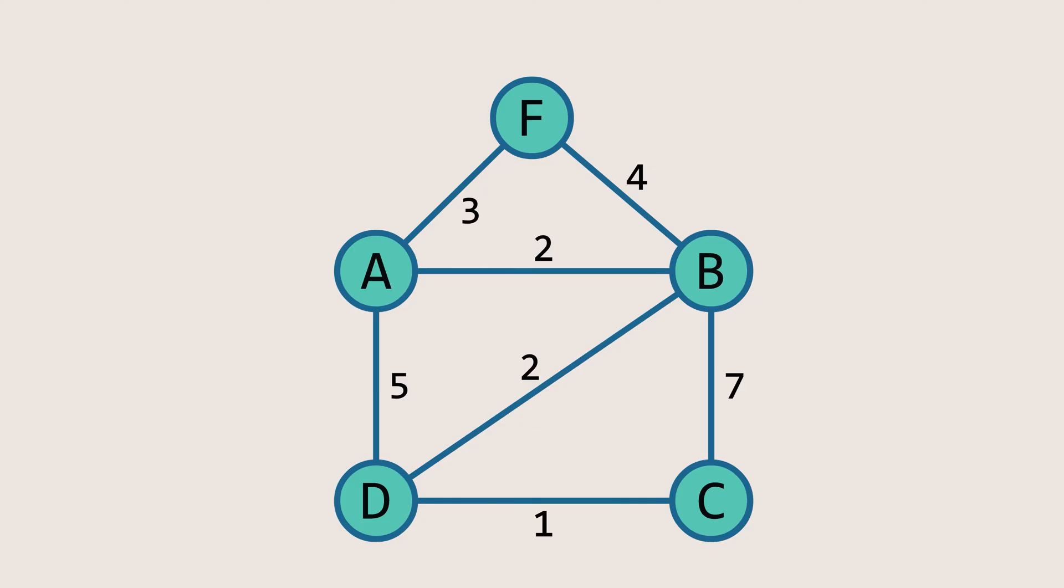Let's find the minimum spanning tree for this example graph using Prim's algorithm. We'll start by selecting a vertex and progressively add edges with the smallest weights while ensuring the graph remains connected and cycle-free.